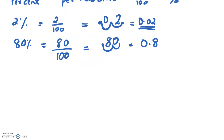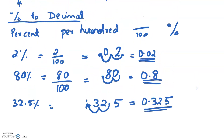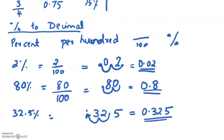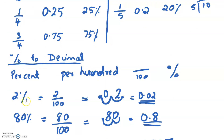Another example: 32.5 percent. To summarise: to convert percentage to decimal, percentage means out of 100. So 2% is 2 by 100, and 80% is 80 by 100 — then simplify or move the decimal two places to the left.